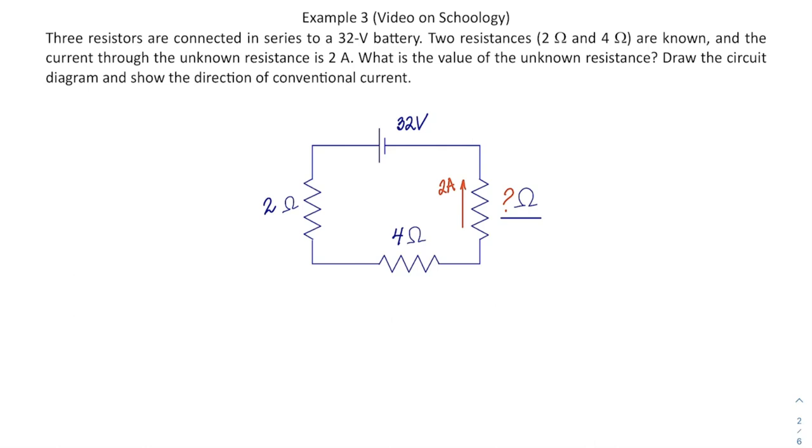I will show you two ways to figure it out. First, if they tell me that the unknown resistance has a current of 2A, knowing that since this is a circuit in series, all the resistances in this circuit get that current. There is 2A here and 2A here.